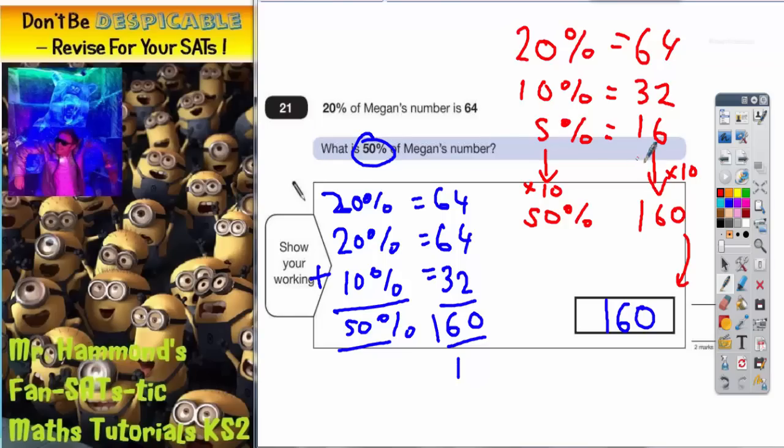Lots of different ways of doing this question. You've just got to manipulate the 20% and try and somehow change it back into 50% by multiplying, by dividing, by halving, by doubling. Got to get it back to 50%.